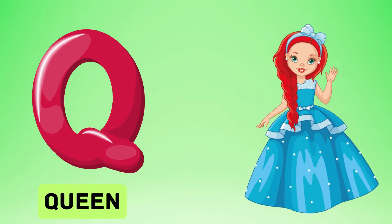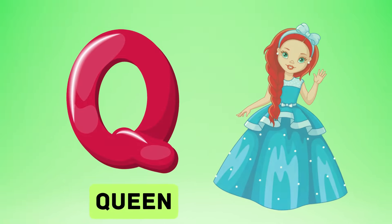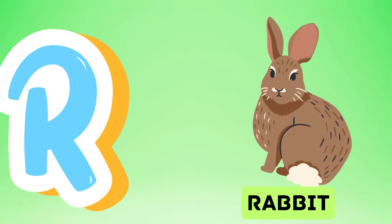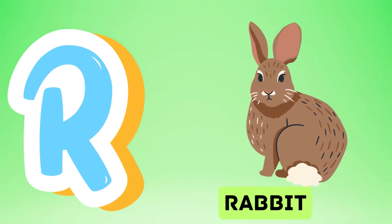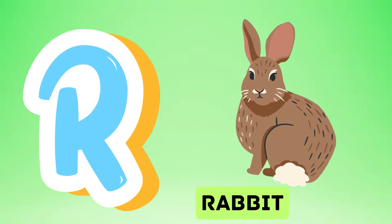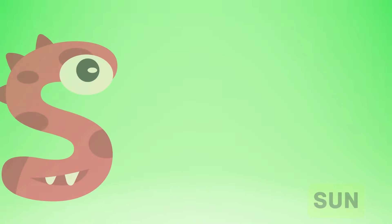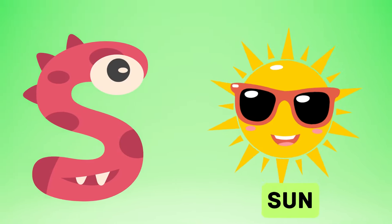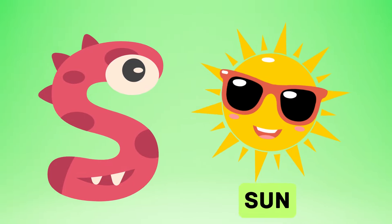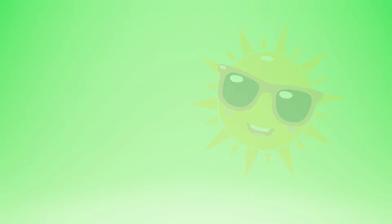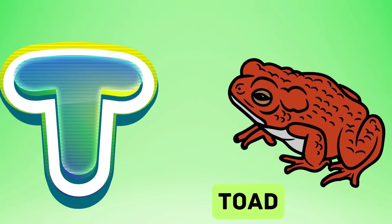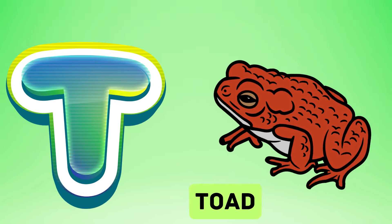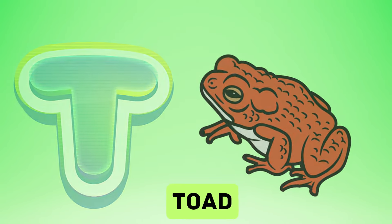Q is for queen, q-q-queen. R is for rabbit, r-r-rabbit. S is for sun, s-s-sun. T is for toad, t-t-toad.